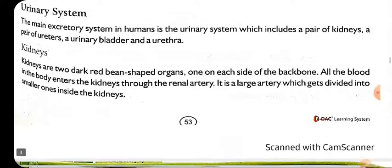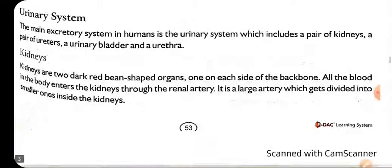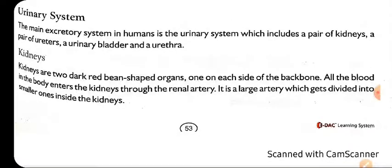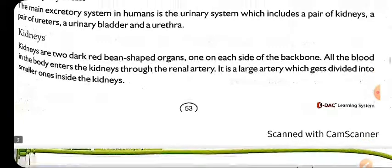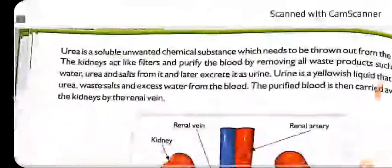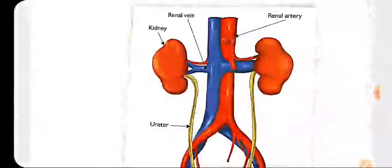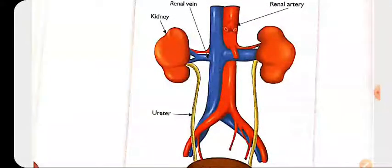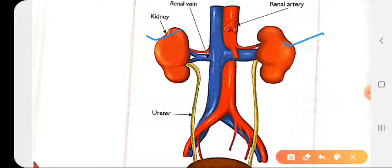The main excretory system in humans is the urinary system. It consists of a pair of kidneys. Let me show you the diagram. Kidneys are the bean-shaped organs which are helpful for filtering the blood.